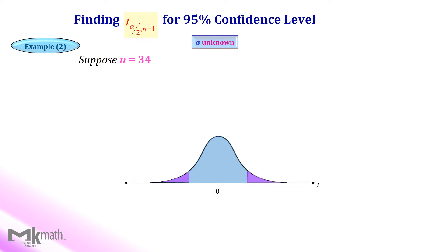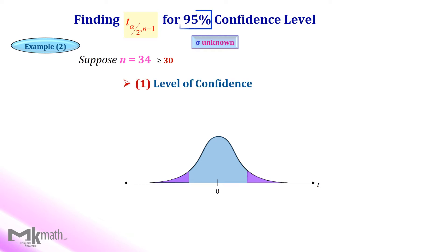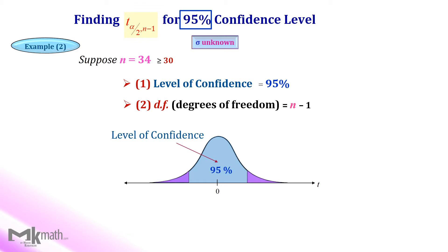Let's take a look at the second example: finding t-critical values for a 95% confidence level with a sample size of 34. Assume that the population standard deviation sigma is unknown. Since the sample size is more than 30, the second condition is satisfied. Step 1: Identify the given confidence level — 95% for this question. Step 2: Find the degrees of freedom by subtracting one from the sample size 34, which is 33. Then look up the table.